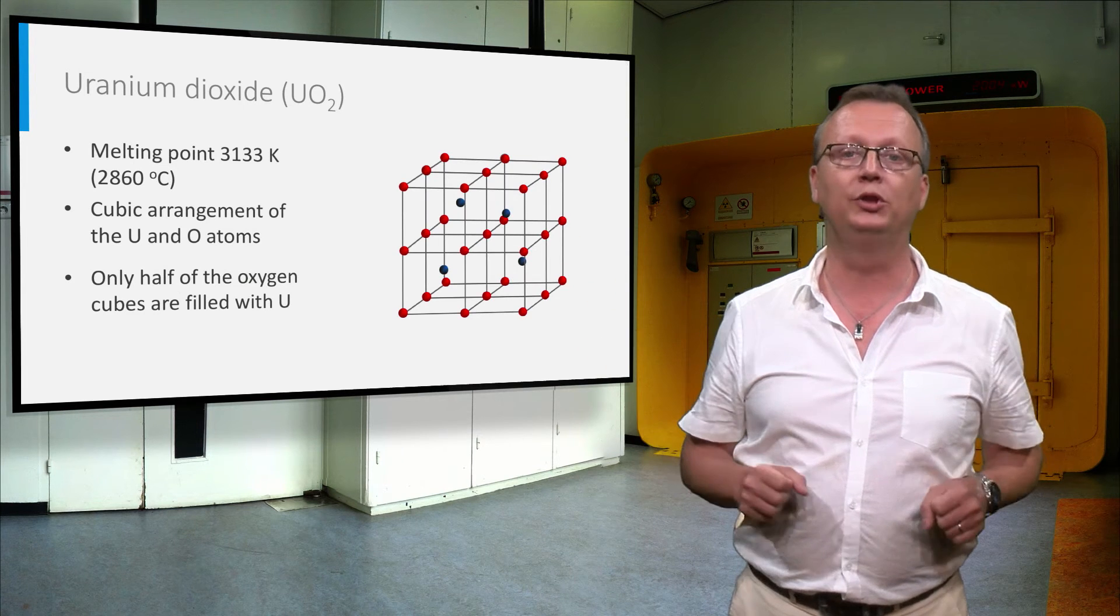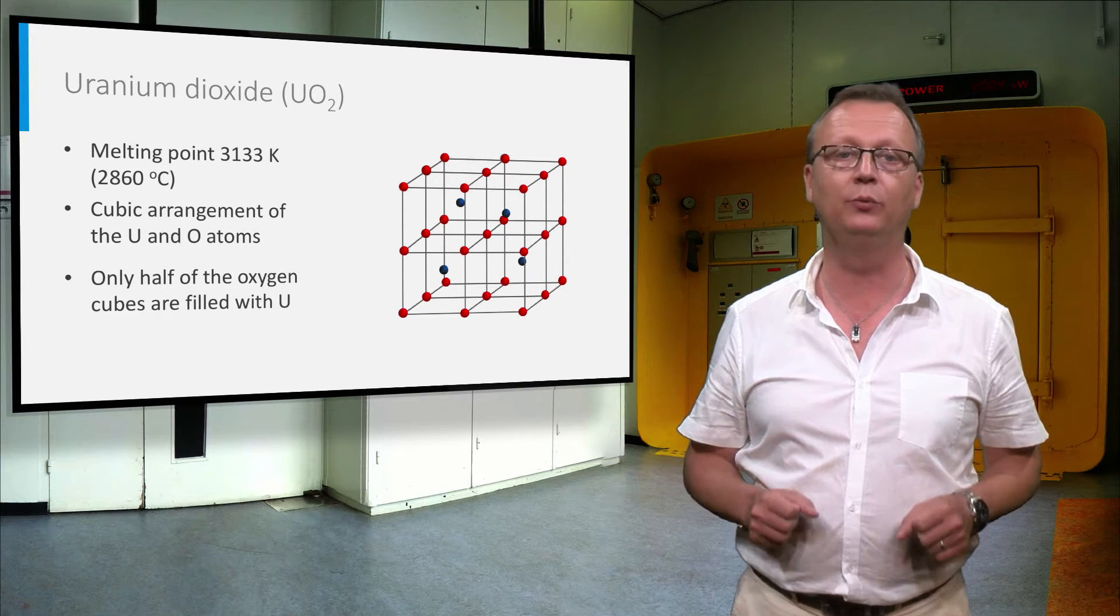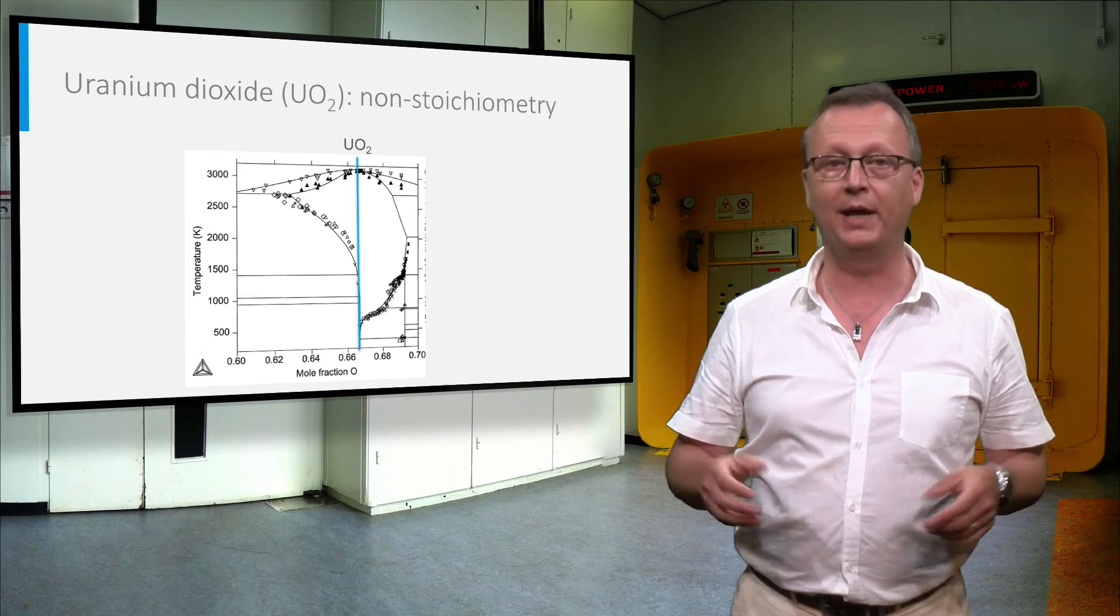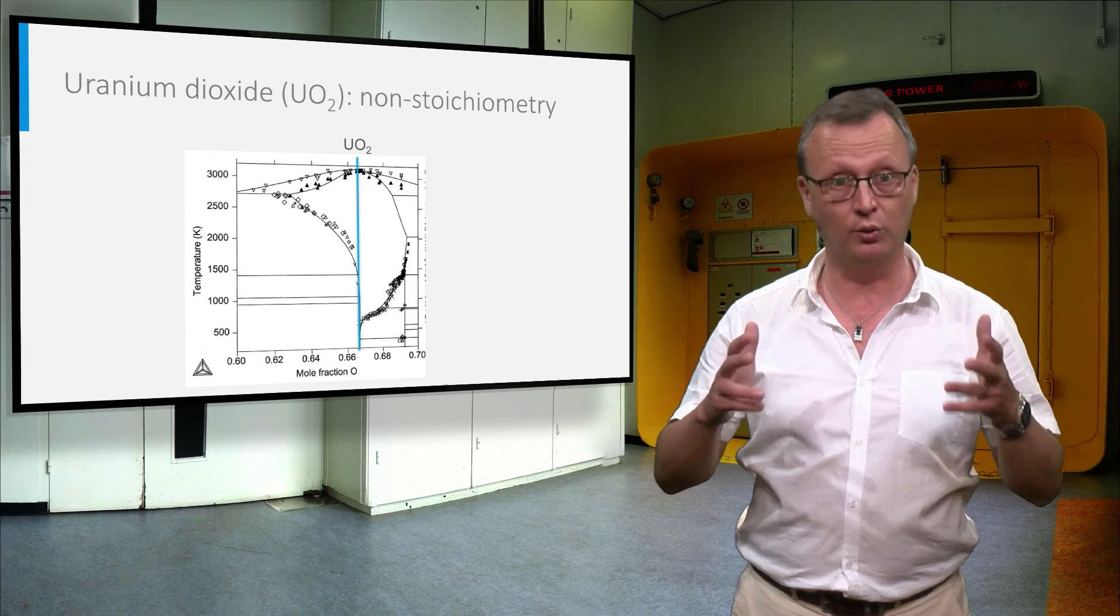If we zoom in on the oxygen sublattice, you can see that only half of the oxygen cubes are filled with uranium. So the uranium dioxide structure has space to accommodate other atoms, becoming non-stoichiometric.